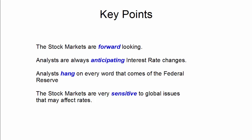So here are the key points I want to bring out by this very quick and short example. The stock market is always looking forward 6 months to 18 months. Analysts are always anticipating interest rate changes. They hang on every word that comes out of the Federal Reserve, and the stock market is very sensitive to any global issue that might affect interest rates. So this is the reason why you see the market get very jumpy when there's any conversation about an interest rate change or something going on like a Greek debt issue that might cause a default which might affect rates. It's a lot going on but it's a real simple explanation of what's happening.